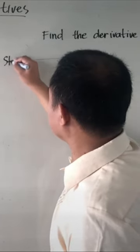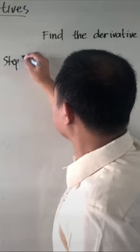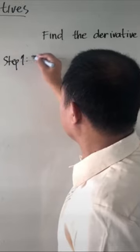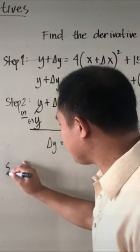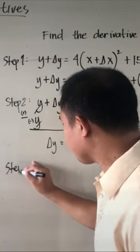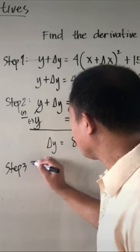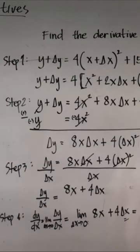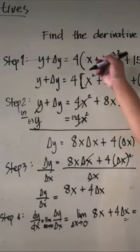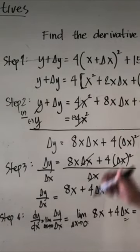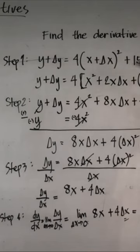We have step 1, step 2, step 3, step 4. Therefore, this is your final answer in terms of finding the derivative of the given function y equals 4x squared plus 15.